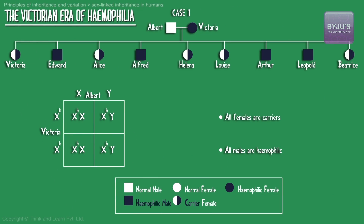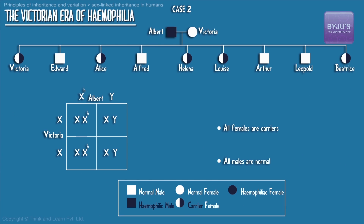Just to give you perspective: if Queen Victoria had a mutation on both alleles and married someone who was not a hemophiliac, this would have been the result. Next, what if the Queen herself had been healthy and had married someone who was a hemophiliac? This would have been the probable result.